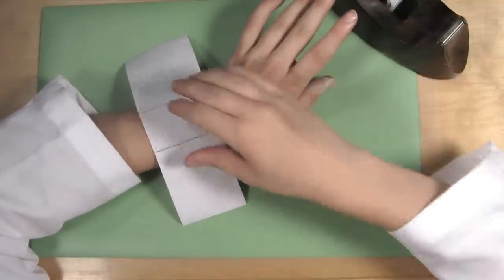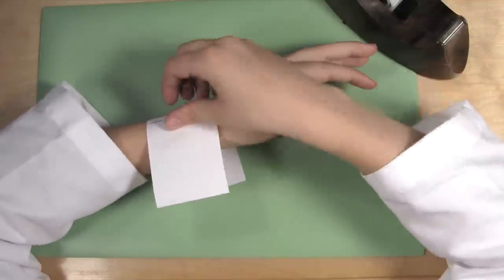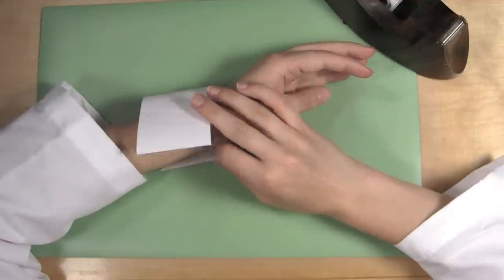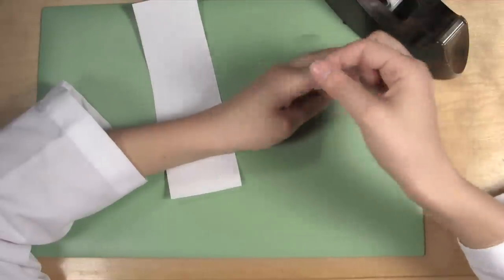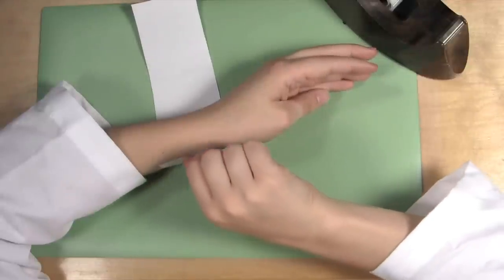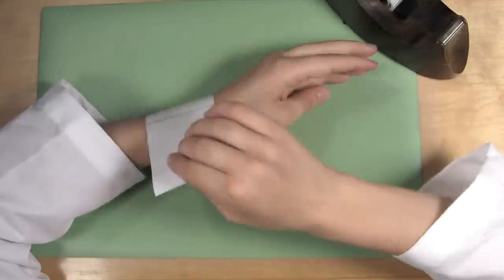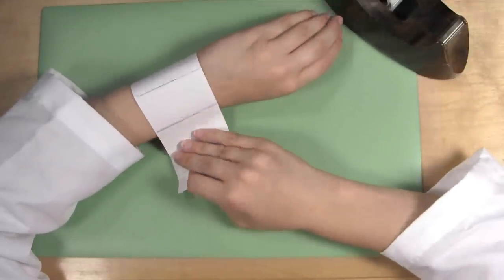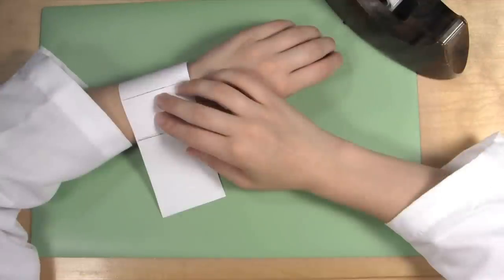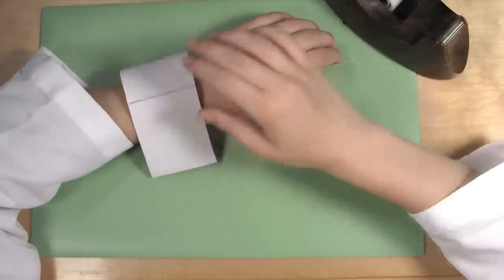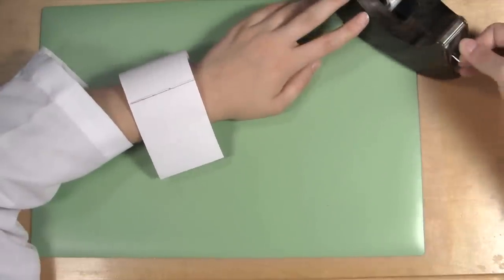Tape one end of the paper to your wrist to hold both the paper to your wrist and the watch case centered on your arm. Then, wrap the remaining loose end of the paper around your wrist and tape that end down to your paper watch.